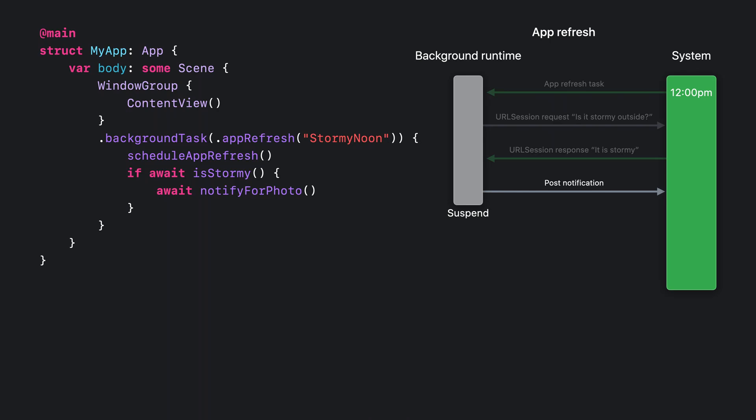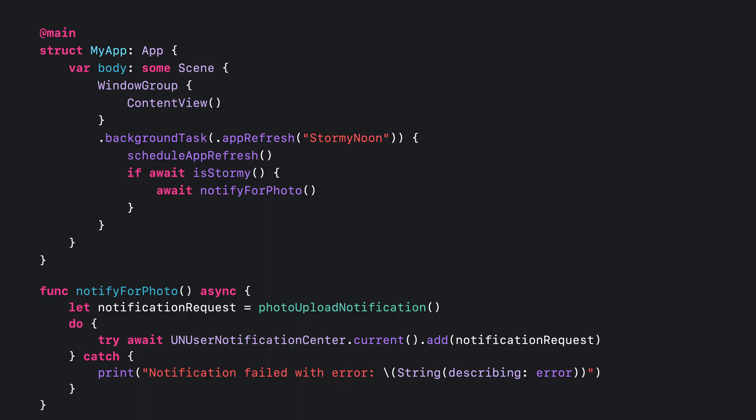Using Swift concurrency has let us do potentially long-running operations in our background task, without the need for an explicit callback for when the work is completed. Many APIs across Apple platforms, such as adding a notification, already support Swift concurrency for asynchronous operations. The notifyForPhoto async function can be implemented in a straightforward way using the asynchronous add notification method found on User Notification Center.